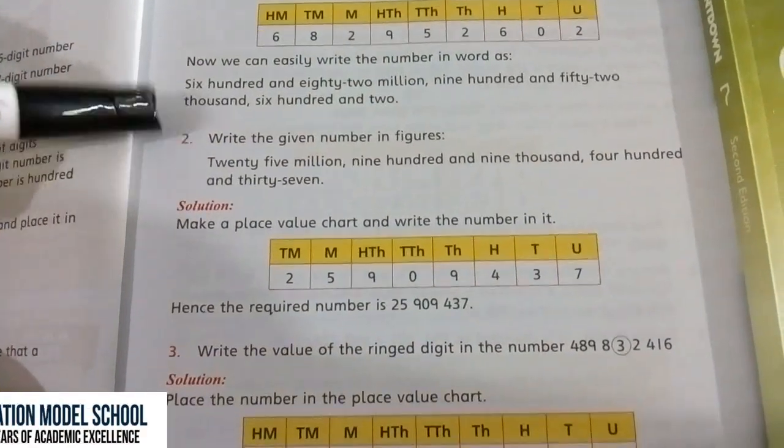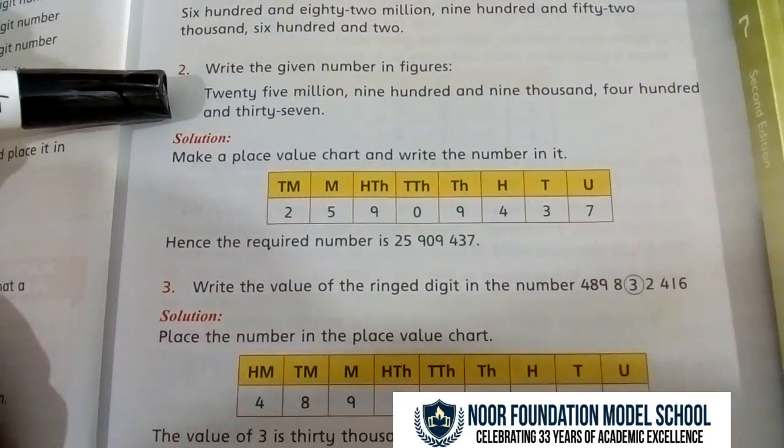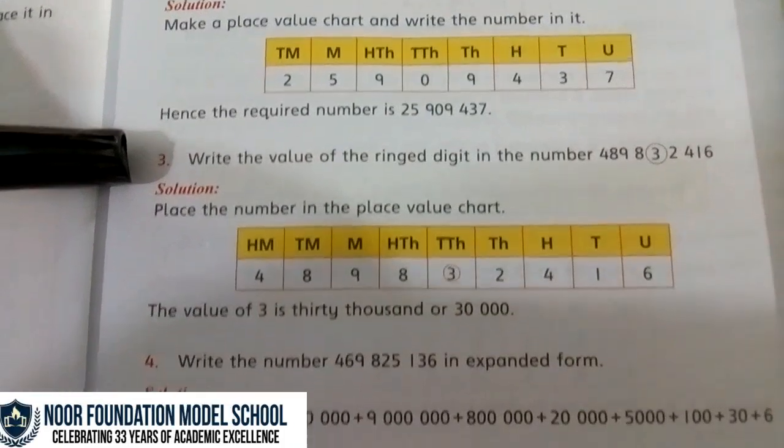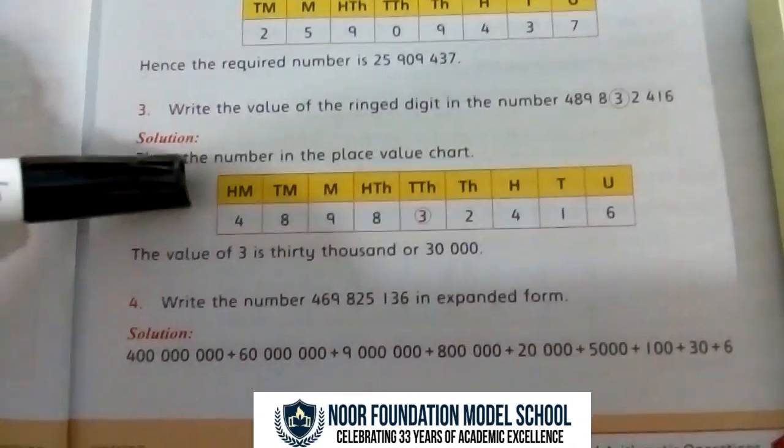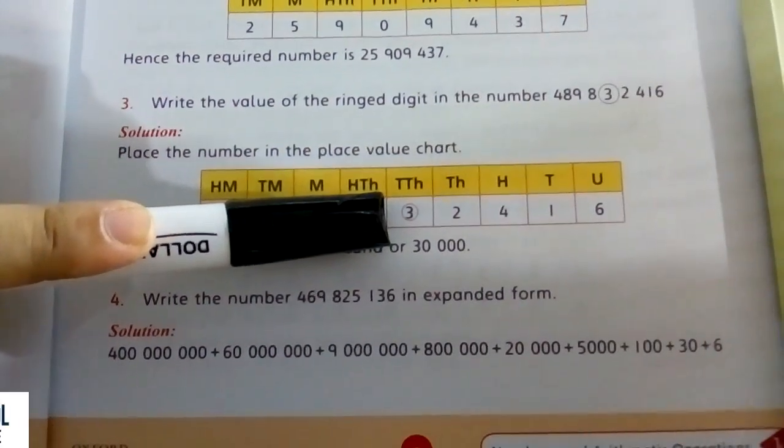Question number 2 is: write the given number in figures. So, first put the place values, and then you will write the number. And then, write the value of the ringed digit. In this also, you will first put the place values, and after that, whatever the ringed digit is, you will write its place value.